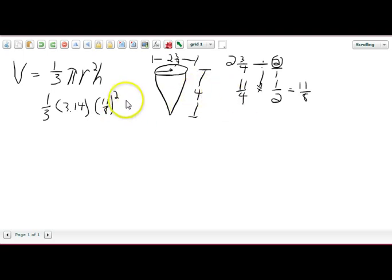And then 11 times 1 is 11, and 4 times 2 is 8. And then we're going to reconvert that back into a fraction for our purposes, or we can just leave it like that. So we'll go ahead and leave it like that: 11 eighths squared, then times the height is 4. So then by using your calculator you're simply just going to work out that math. So 1 third times 3.14 times 11 eighths squared times 4.